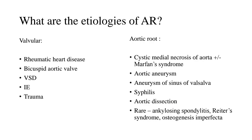In aortic dissection, the flap interferes with coaptation of the aortic leaflets. There are also a host of rare causes like ankylosing spondylitis, Reiter syndrome, and osteogenesis imperfecta.